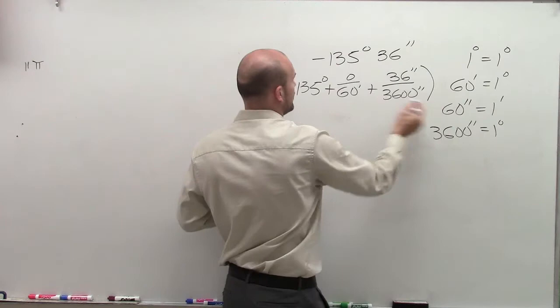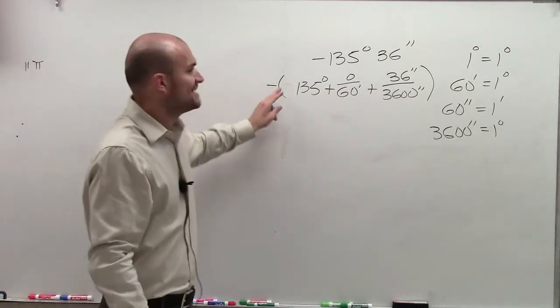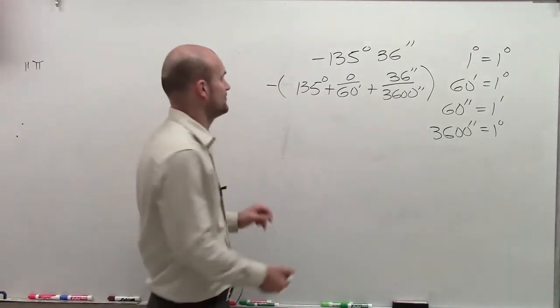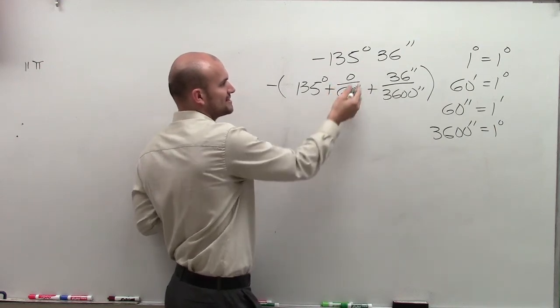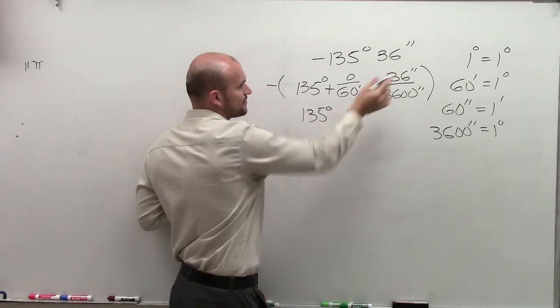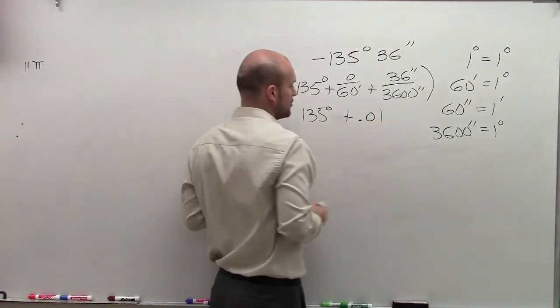And I'm going to add all these up to 135 degrees. I'm not going to be concerned with the negative as the negative is just telling me the direction, not the value of the angle. So I don't have any minutes, so that's not going to apply. So I have 135 degrees plus 36 divided by 3600 is going to be 0.01.